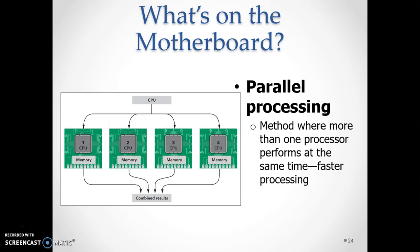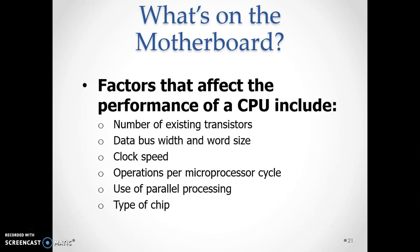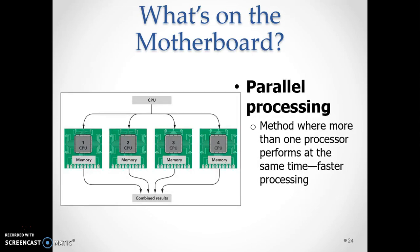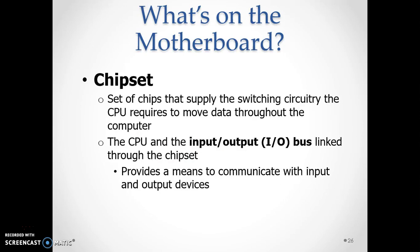Factors nyingine ni type ya chip inayotumika — CPU chip. Kuna chips ambazo zinakuwa na high quality inayoboresha performance, na nyingine hazifanyi vizuri. Pia kuna kitu cha msingi kinachuitwa chipset: baada ya CPU kukamilisha processing, inatumia chipset — chips ambazo zinaconnect CPU na output na input devices.